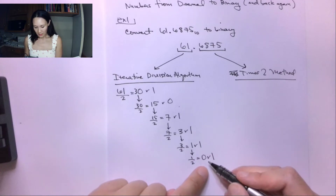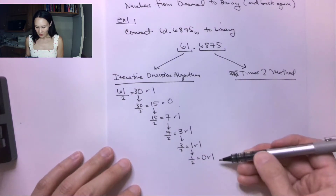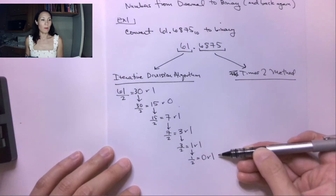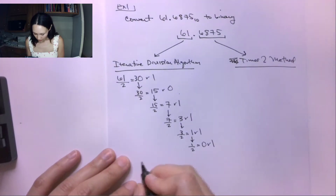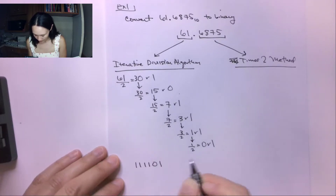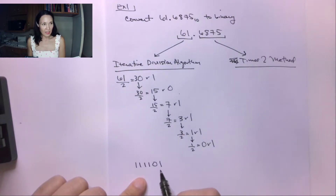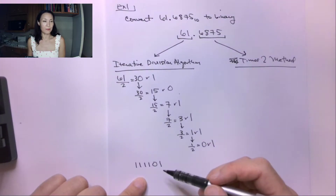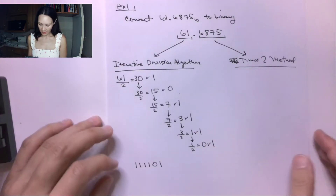This is our stopping condition for the iterative division algorithm — when we get Q equals zero, that's when we stop. We collect all of our remainders from bottom to top, so the order of our remainders is 1, 1, 1, 1, 0, 1. This is the binary conversion of 61. Great, so we are halfway done.